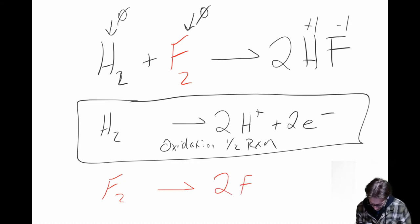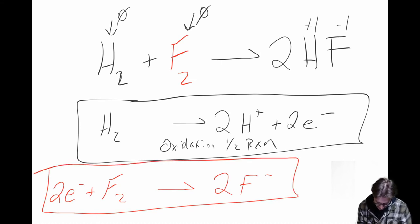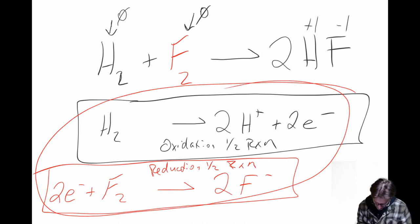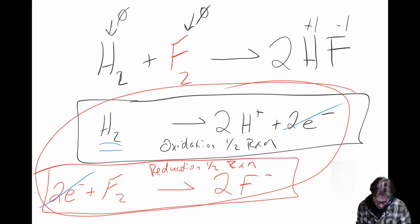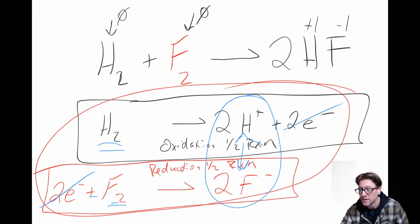For the fluorine half-reaction: F₂ reacts to form two F⁻ ions. Electrons are consumed here, so we add two electrons to the reactant side — two electrons plus F₂ gives two F⁻. This is our reduction half-reaction. When we add the two half-reactions together, the electrons cancel out, giving us H₂ plus F₂ → 2H⁺ + 2F⁻, which in solution come together to form HF.